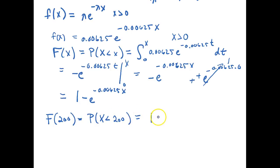So F of 200 is the same as the probability that X is less than 200, and this is then simply equal to 1 minus e to the negative 0.00625 with 200 in the place of X. Alright so this is then equal to 0.7135. So that is the probability that the number of hours the generator will be operational is less than 200.